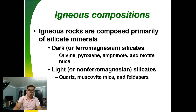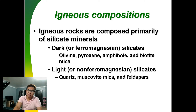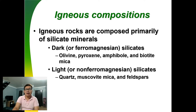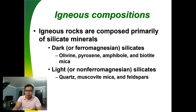Regarding igneous compositions: igneous rocks are mainly made up of silicate minerals. There are dark-colored minerals called ferromagnesian silicates — these include olivine, pyroxene, amphibole, and biotite mica. There are also light-colored or non-ferromagnesian silicates, which include quartz, muscovite mica, and feldspars.